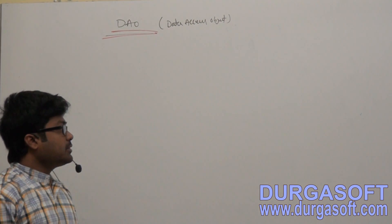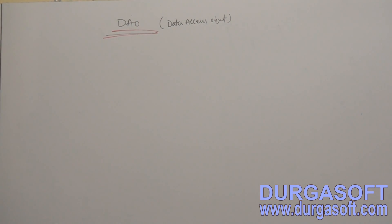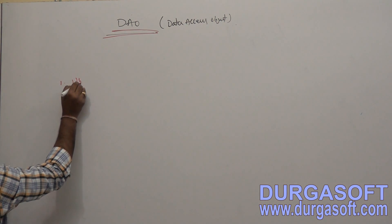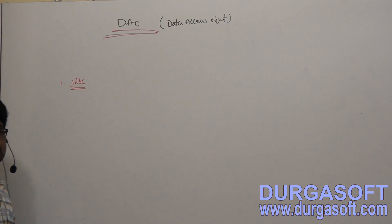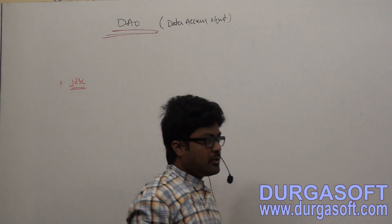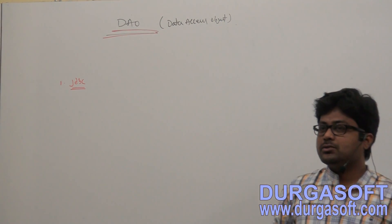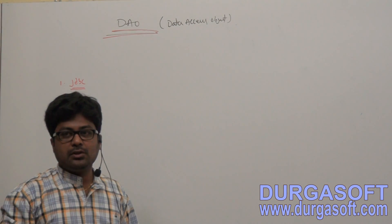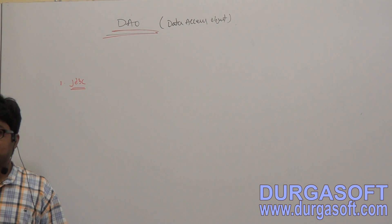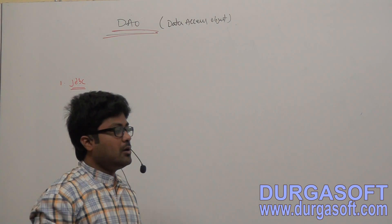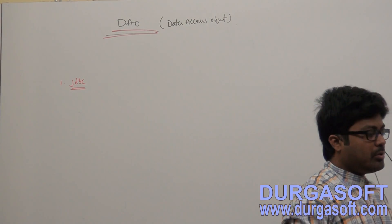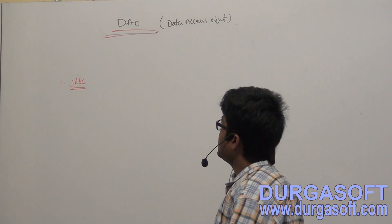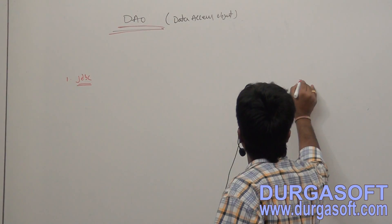For implementing DAO classes, from Sun we have support — simple JDBC support for implementing simple data access objects. Data access object's main purpose is to interact with data machines. The data machine can be an RDBMS machine, or it can be LDAP machines, or it can be non-SQL, or it can be an XML machine. It needs to do persistence operations.